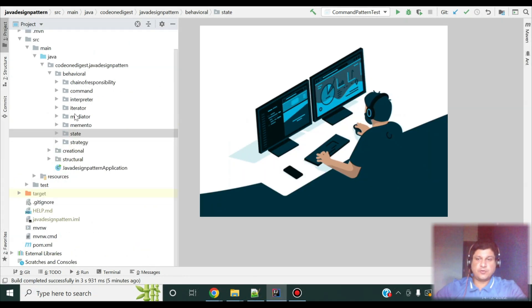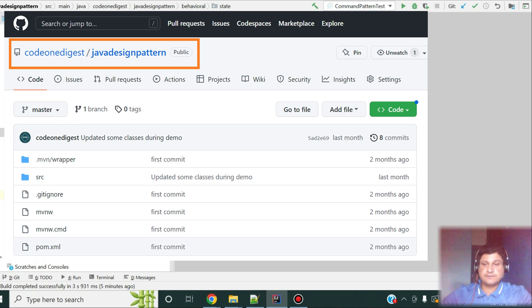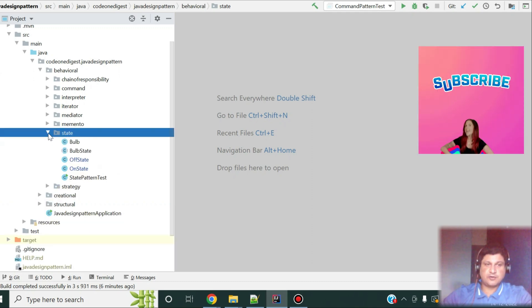Okay friends, I have written a code for state design pattern and I'll walk you through the code first and then I'll give you the demo by running this code. And this code is also available in the GitHub repository. You can download the code and play with it. The link of the GitHub repository is shown on your screen and also available in the description section of this video. Okay, let me show you what I have written. I have a state package where all my classes are there for this pattern. Then, I have defined one bulb state.